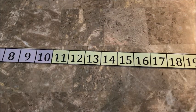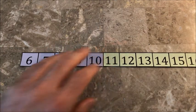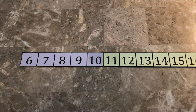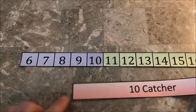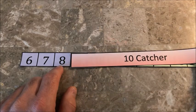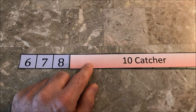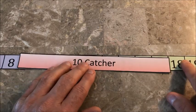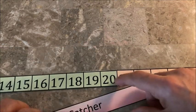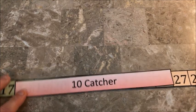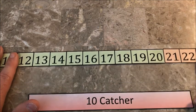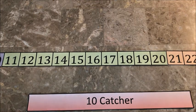Another activity is the ten catcher, which many people like because counting by tens is so hard for kids — especially leaving single digits and jumping into the teens. It's a language issue: 6, 16, 26 — a lot of kids struggle with that. The ten catcher shows kids the jump of 10: if you're at 8 and jump 10 it goes to 18; if you're at 17 and jump 10 it goes to 27.